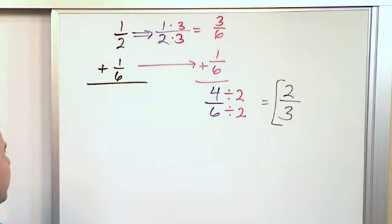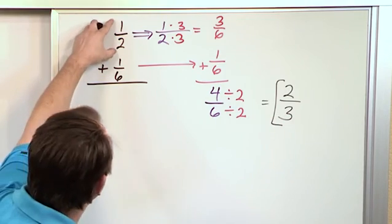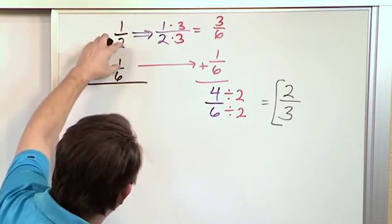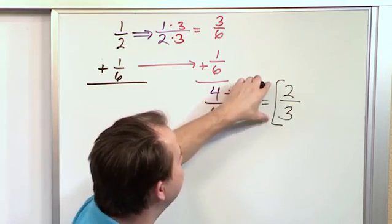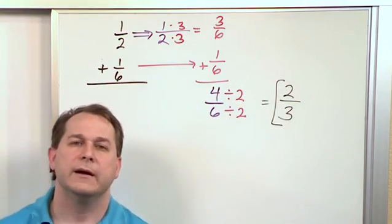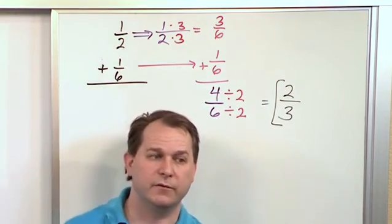So what we get is two-thirds. So if we have one person drive for one-half of the trip, and the other person drive for one-sixth of the trip, altogether they've driven about two-thirds of the trip towards their destination.